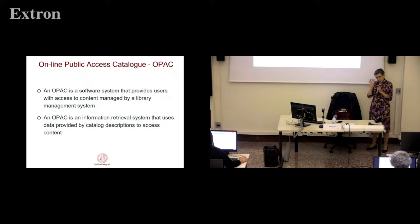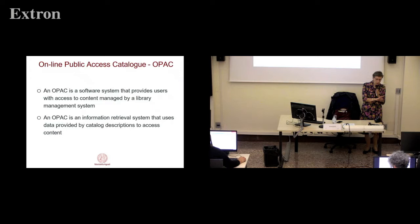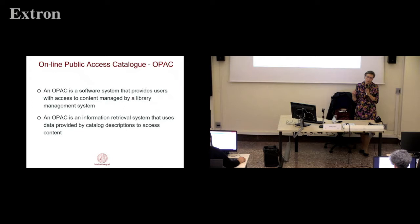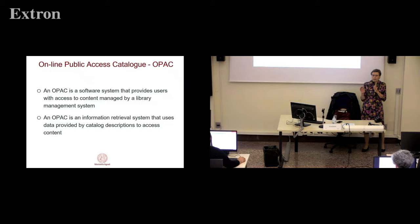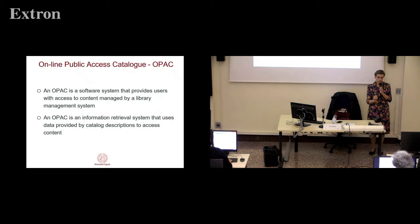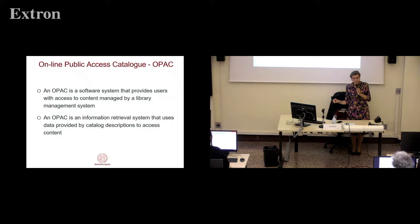It's a different application area from library automation. Library automation manages information present in documents in libraries; information retrieval manages the representation of the semantic content of documents. At that time, applications were very vertical — if an application was addressing library automation, it was only for library automation. The OPAC is the first case where a system uses knowledge from both library automation and information retrieval together to give information directly to the user.